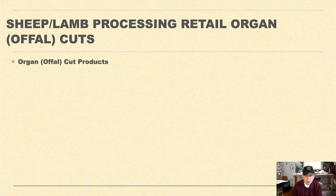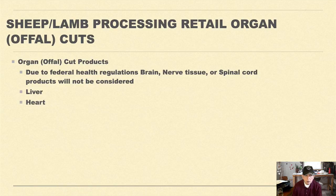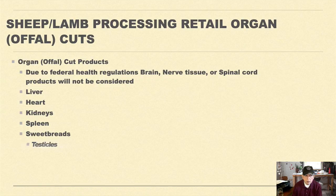Organ and offal cut products: due to federal regulations, brain nerve tissues and spinal cord products will not be considered in this list. The organ and offal products include liver, heart, kidneys, spleen, sweetbreads, testicles, tongue, and tripe.